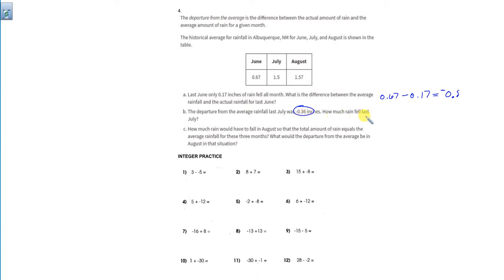How much rain fell last July? Well, they were 0.36 inches below their average, which is this. So you just have to do 1.5 and subtract 0.36 to find out what it was. Borrow.